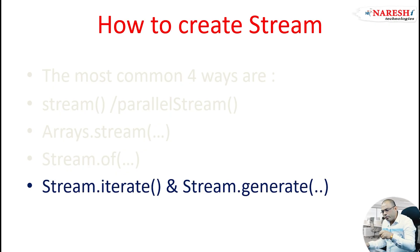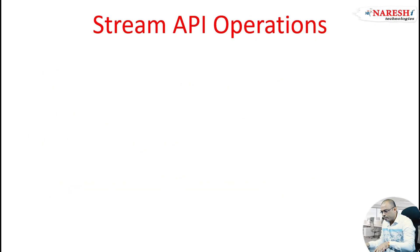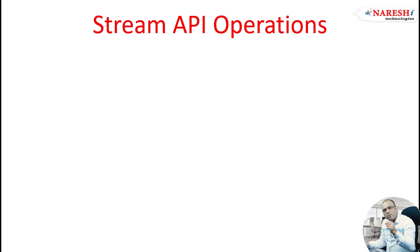In today's video, let's try to understand what operations we can perform on a stream — Stream API operations. Basically, on a stream we can perform two types of operations: one is intermediate operation, and another one is terminal operation.